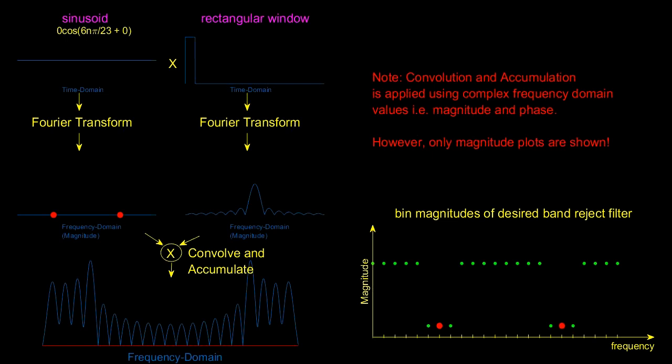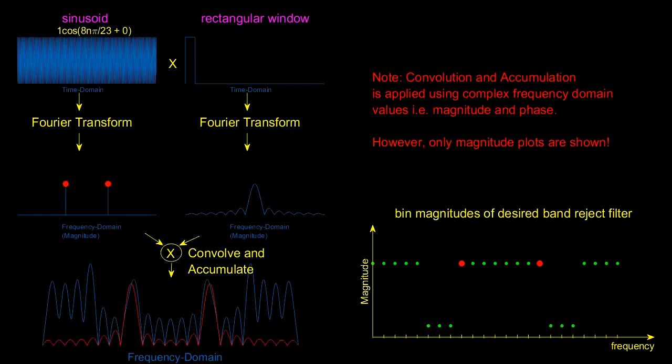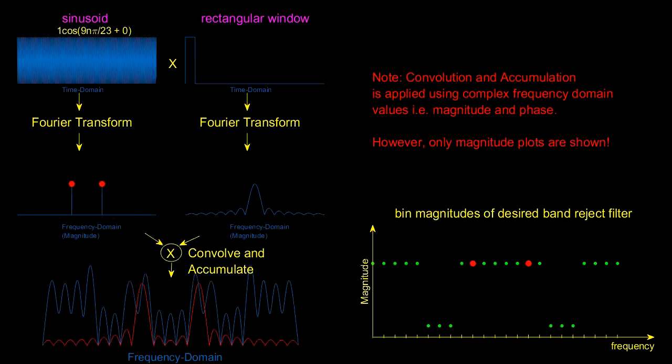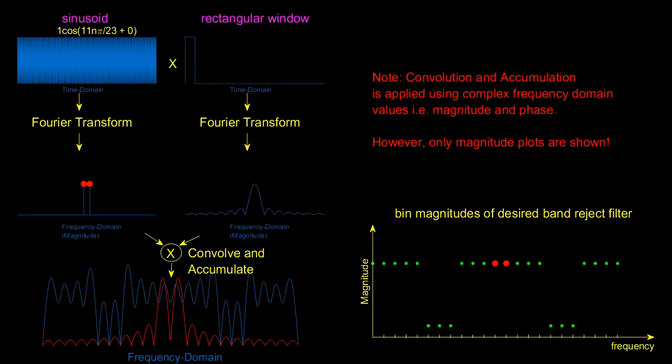Each of the pair of bins will contribute to the overall frequency response as being shown. If we finally add in the contribution from the DC bin to the responses of all the other individual bandpass filters we'll actually get the frequency response of our heavily rippled band reject filter.